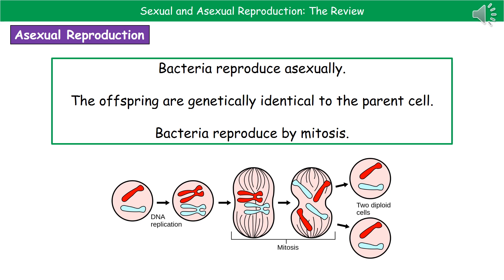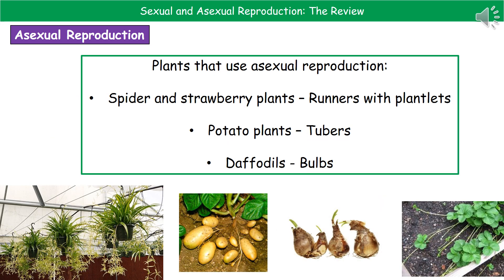When bacteria reproduce, they reproduce asexually. This means they literally copy their DNA, as we've seen in DNA replication in our B1 topic. Then the chromosomes line up along the equator, they're pulled to the opposite poles, and the cell divides, giving us two cells that are genetically identical to the parent — therefore they're clones. Bacteria reproduce asexually through the process of mitosis.